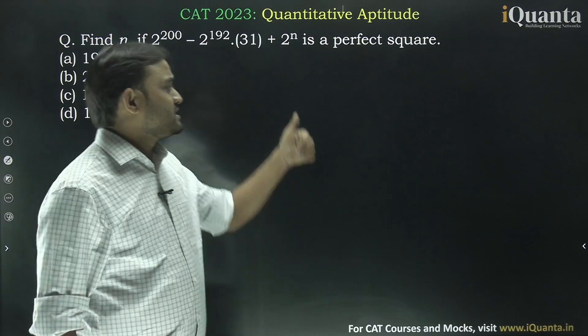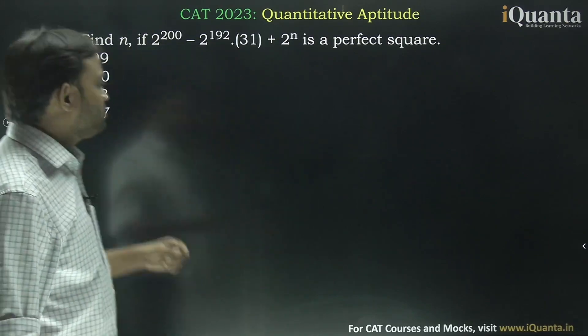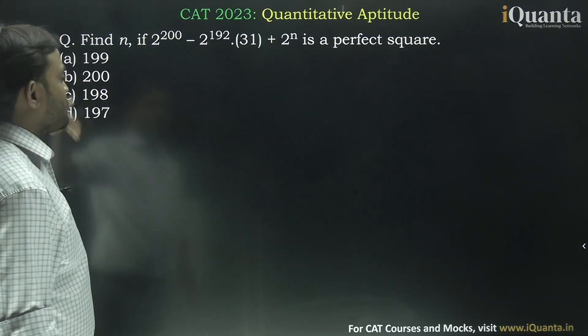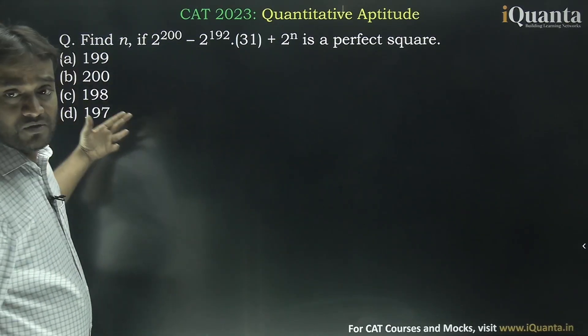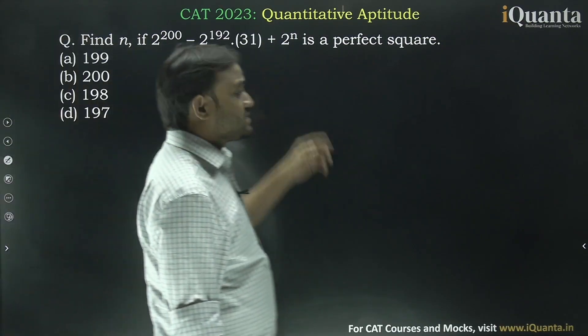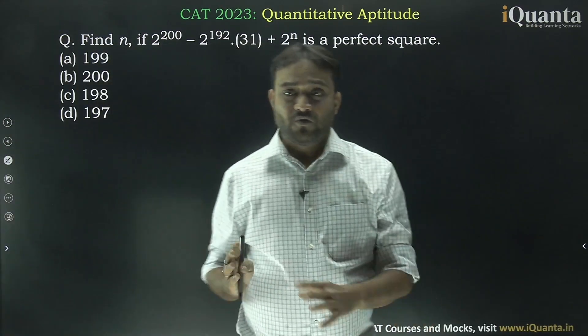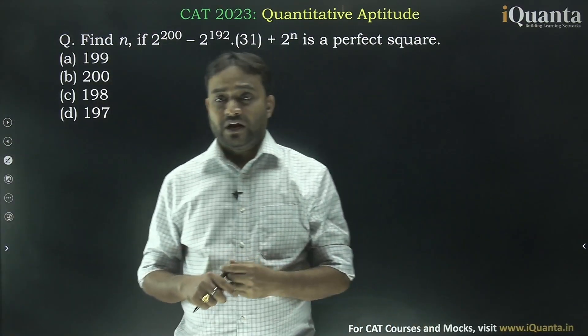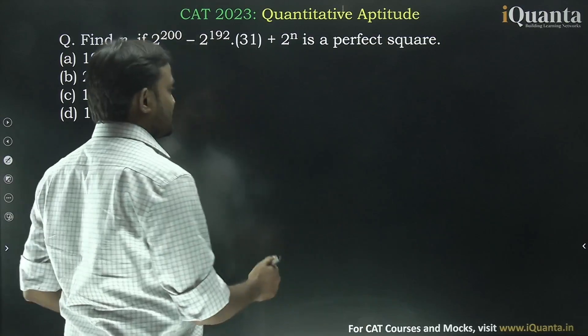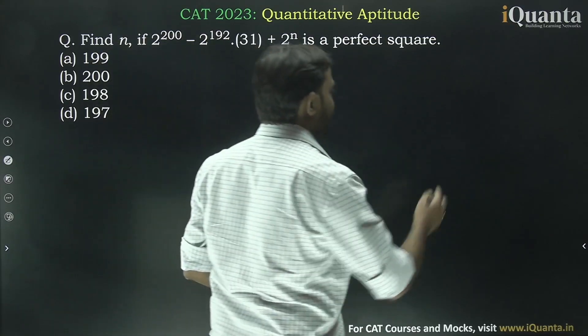Now there could be many possible values for which this will be a perfect square, but we need to find it from the options. You can see all the terms are in the form of 2 to the power a, so first we are trying to understand that.